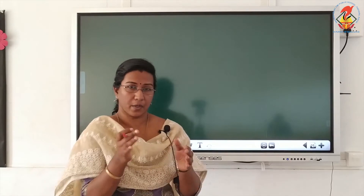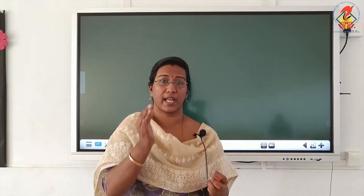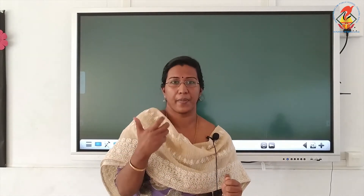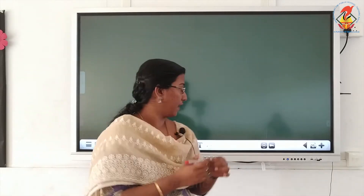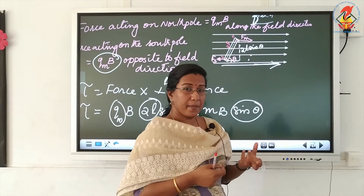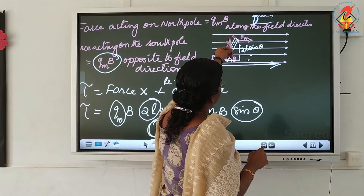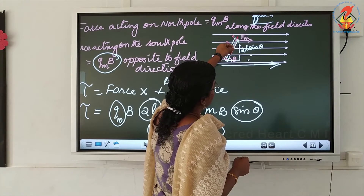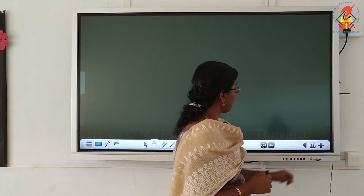When a bar magnet is placed in an external magnetic field it experiences torque. If I apply some force and rotate the magnet against the field direction, a restoring torque develops in the magnet and it tries to align back to the initial field direction. Applying an external force to rotate through angle theta causes a torque that tries to regain the magnet's initial position parallel to the field, resulting in oscillation.